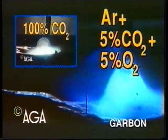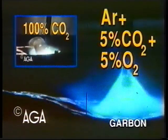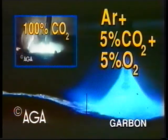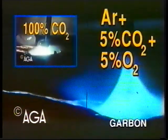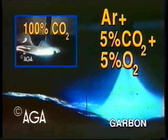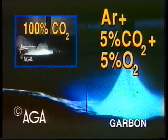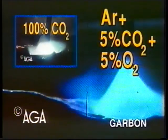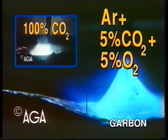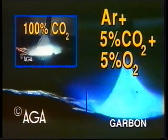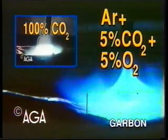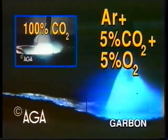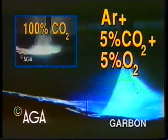Argon with 5% carbon dioxide and 5% oxygen resembles argon with 8% carbon dioxide, but with a longer liquid column of the melted part of the electrode. The pressure on the weld pool is low.